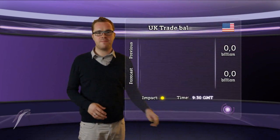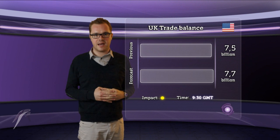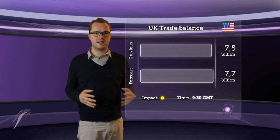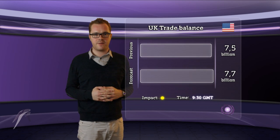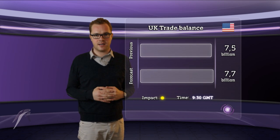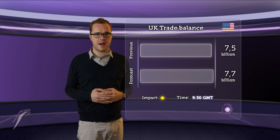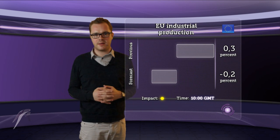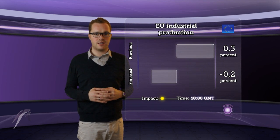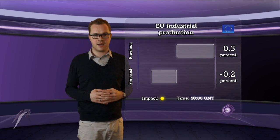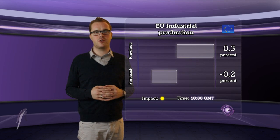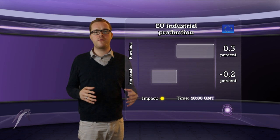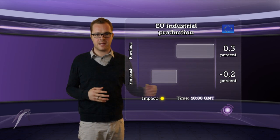First news today is regarding the trade balance, expected at 9:30am GMT from the National Statistics in the UK. Analysis is expecting a deficit of 7.7 billion compared to the previous deficit of 7.5 billion, with a medium impact on sterling. Next, Eurostat is going to report monthly numbers about industrial production in the Eurozone at 10am GMT. A decline from 0.2% is expected, while in the previous report production rose 0.3%. Medium impact on the Euro can be expected.